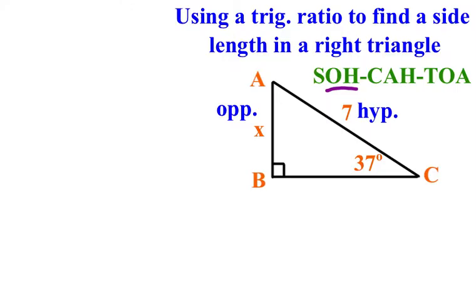So our setup, like from the previous video, would look like this. The sine of 37 degrees is equal to the opposite side, which is X, the one we don't know, over 7. Is this an equation that we could solve for X? Sure, as long as we could figure out what the sine of 37 degrees is.